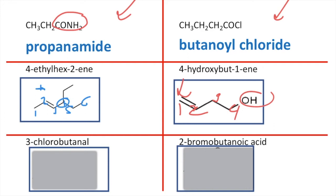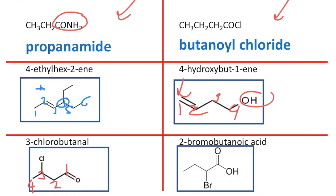For the next one we've again got two functional groups — a chloro and an aldehyde — so a halogenoalkane and an aldehyde. Four carbons, with carbon number one being where your aldehyde is: one, two, three, four. And as you can see, your chlorine is on carbon number three.